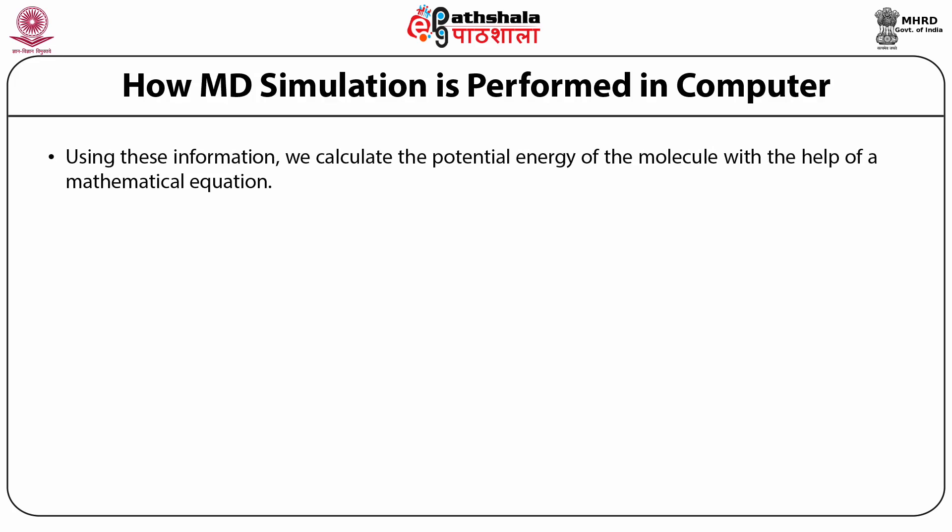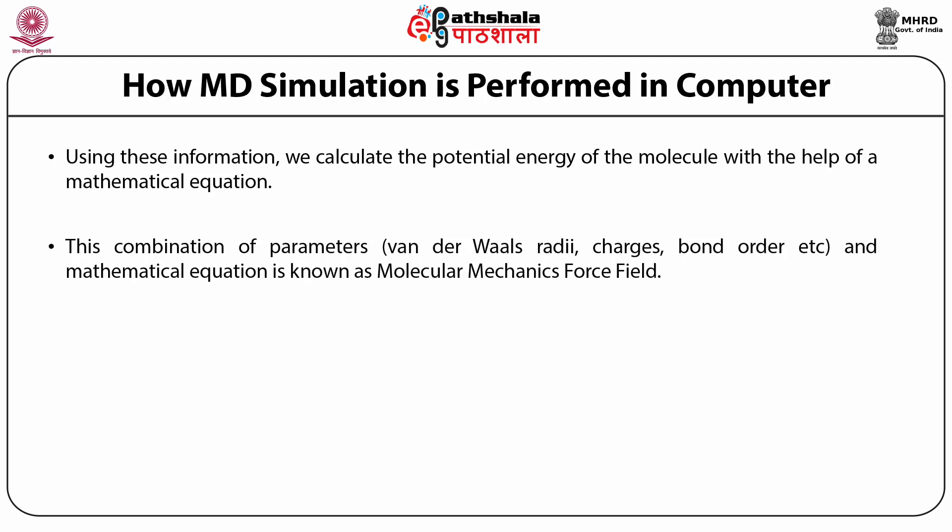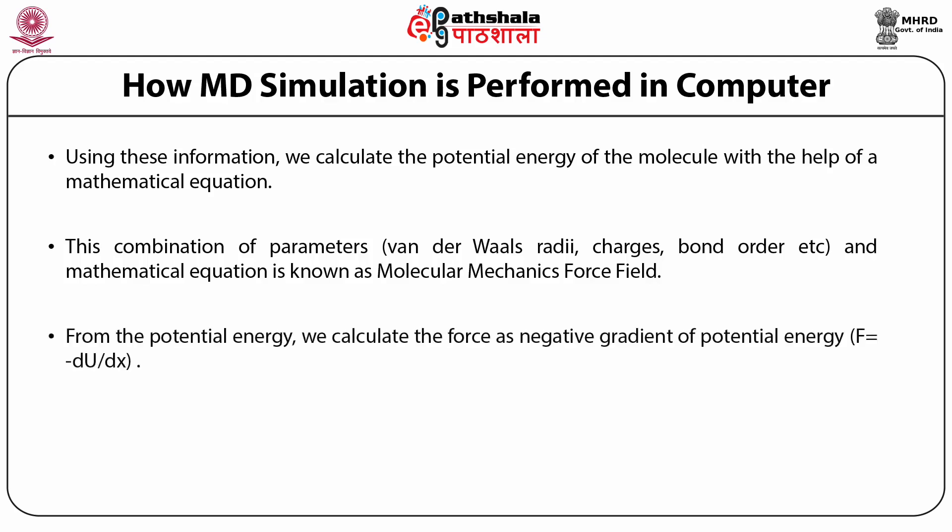Using this information, we can calculate the potential energy of the molecule using mathematical equations with force field potentials. The combination of parameters — Van der Waals radii, electrostatic charges, bond order, and the mathematical equation relating these parameters to molecular properties — is known as the molecular mechanics force field. From the potential energy, we can calculate the force, since the negative gradient of potential energy gives force. Because force is a vector quantity and complex to use in calculations, we can use the potential and differentiate it at a particular position to obtain forces and then calculate atomic positions using Newton's second law.